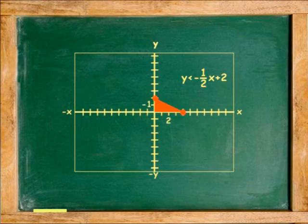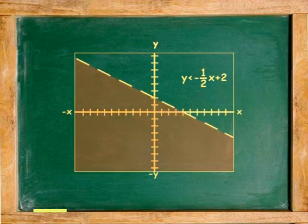From 2, down 1, to the right 2. And the solution is below the line. And the line is dashed because it is less than.